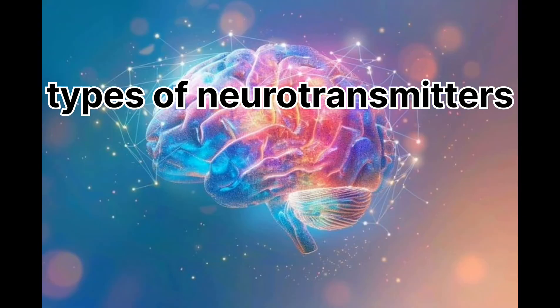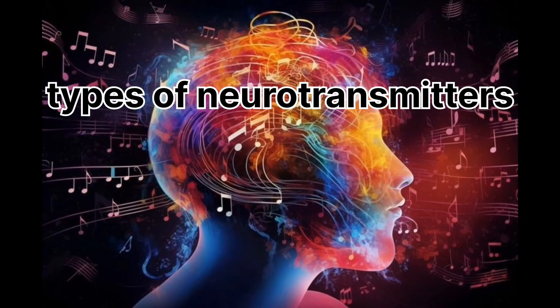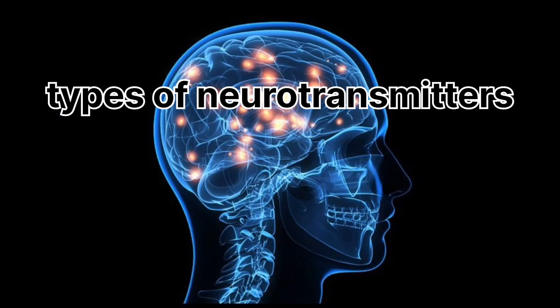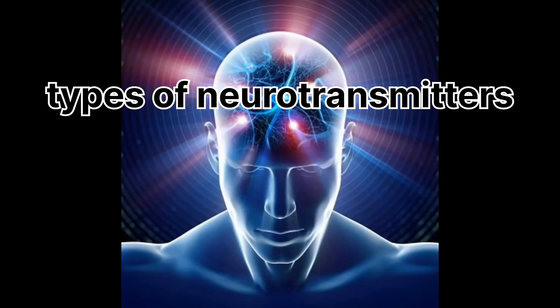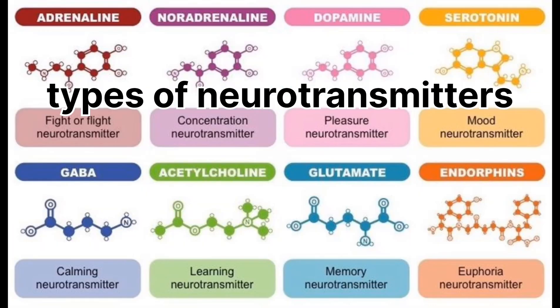The common neurotransmitters we will cover in this video, which are included in our moods and emotions, are: acetylcholine, dopamine, serotonin, norepinephrine, glutamate, and GABA. Each of these has different functions.